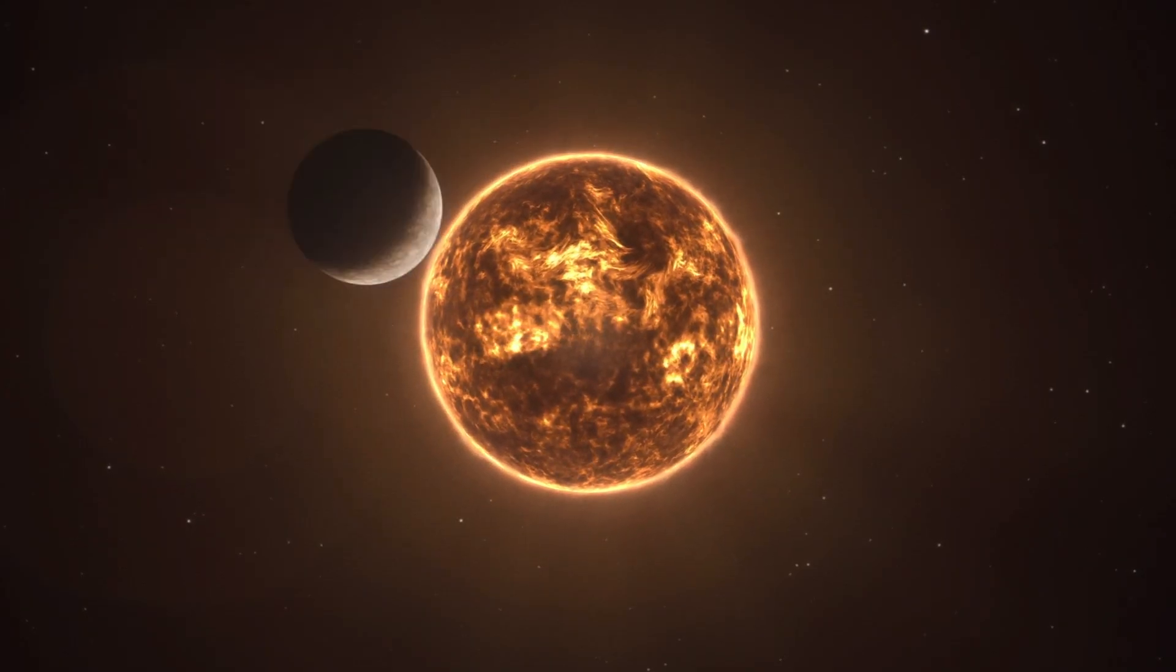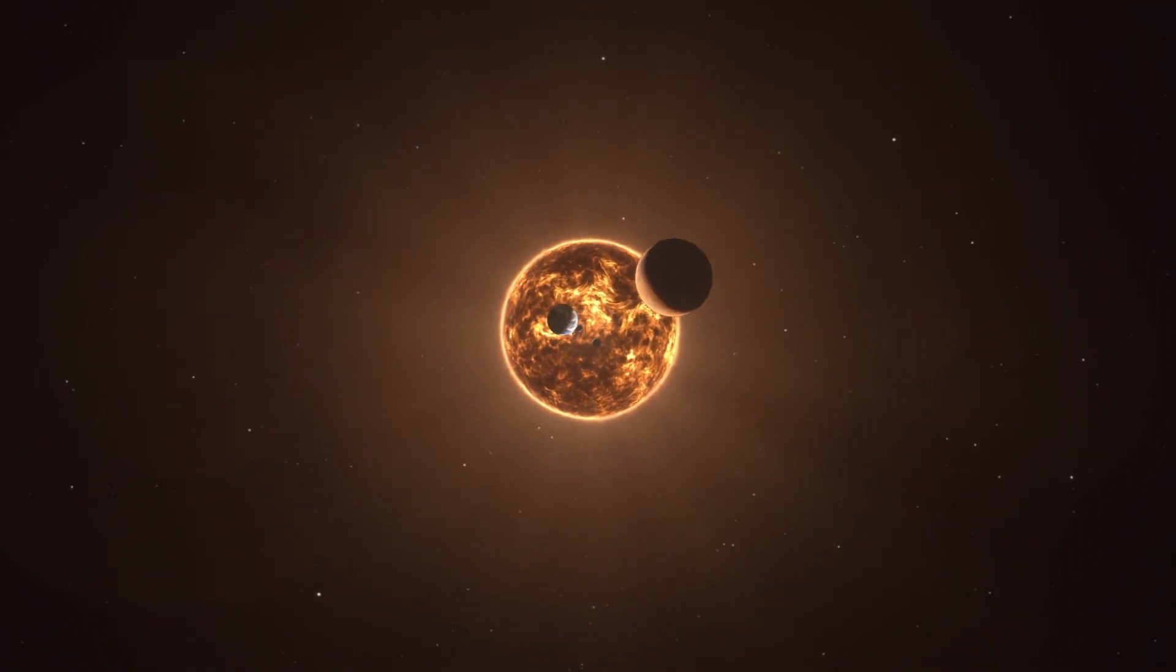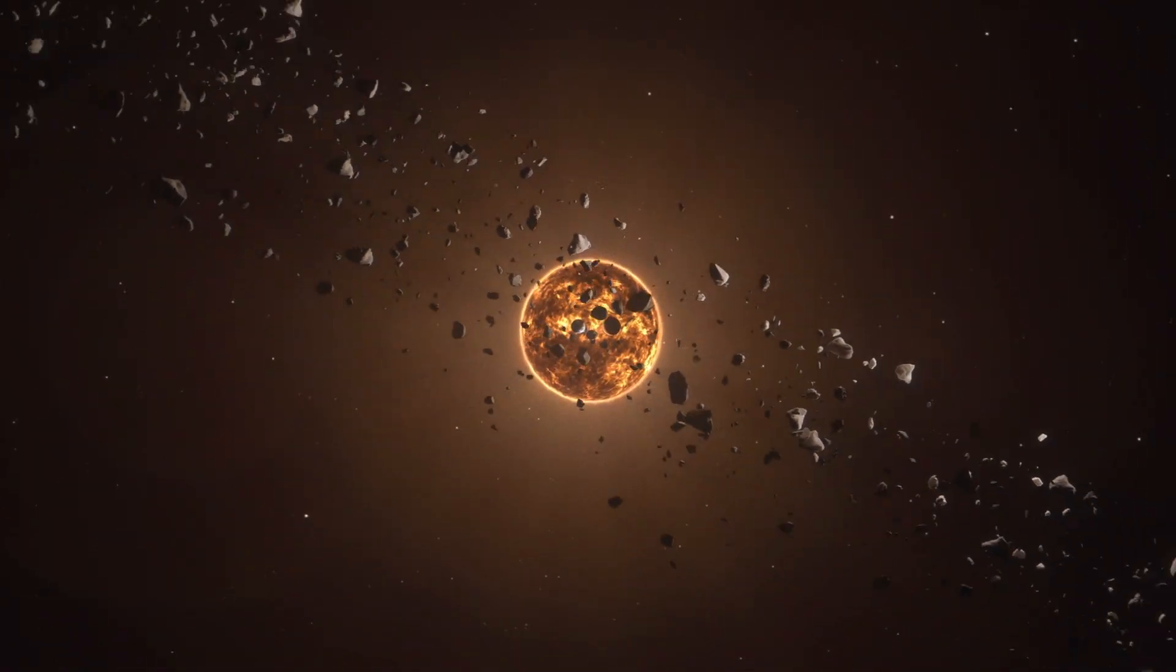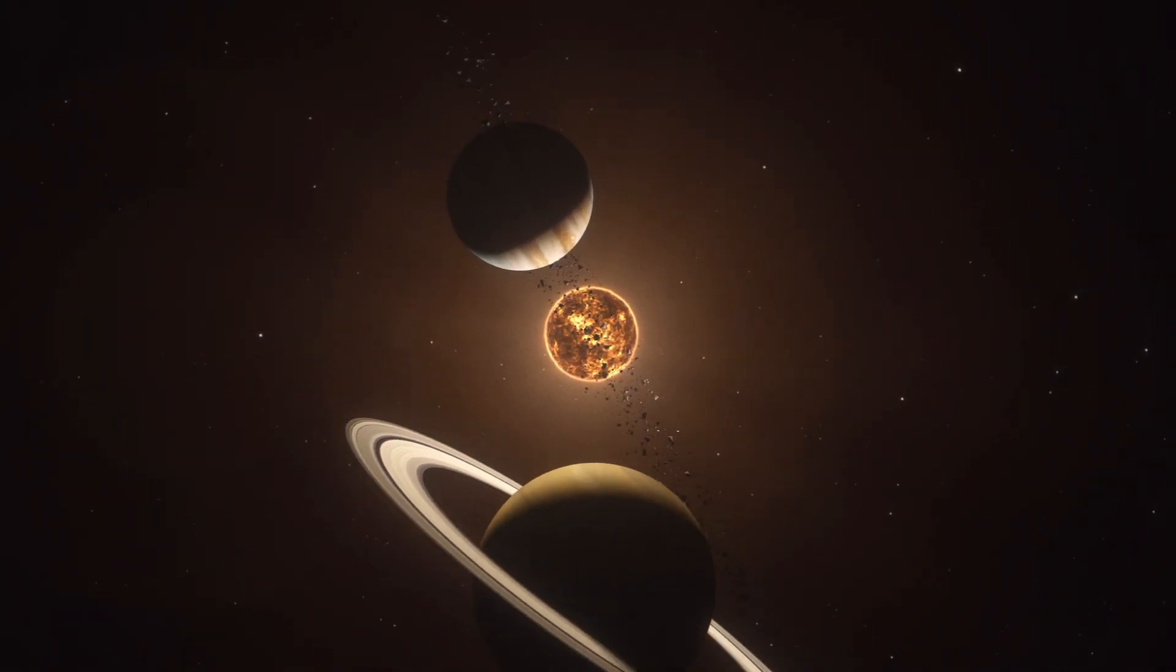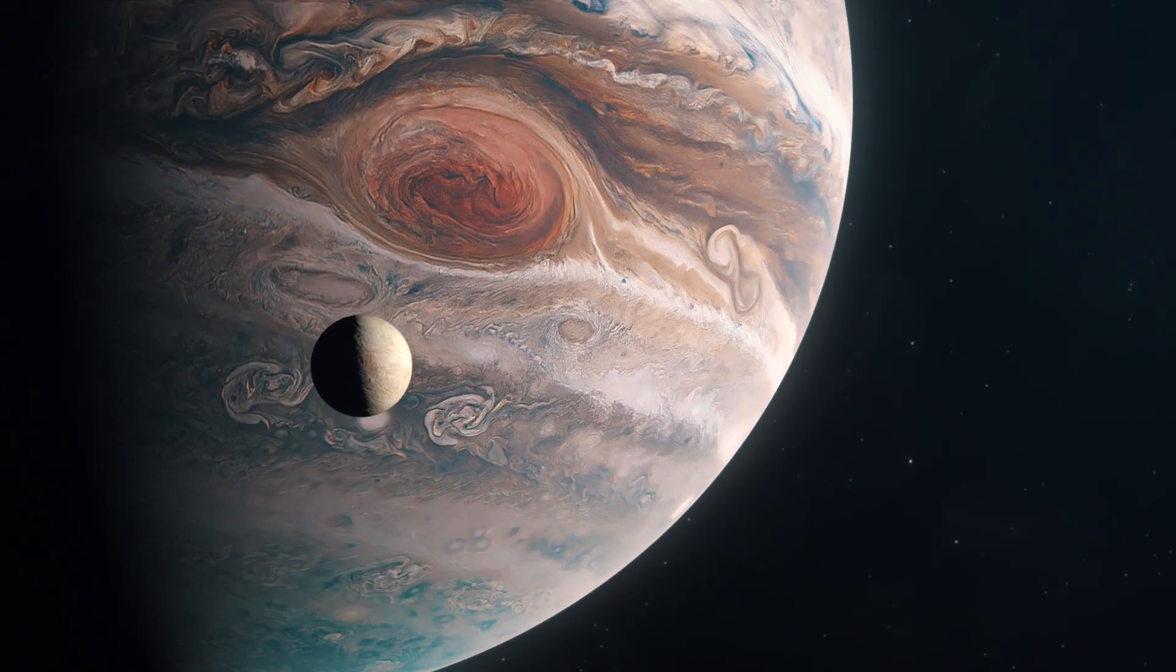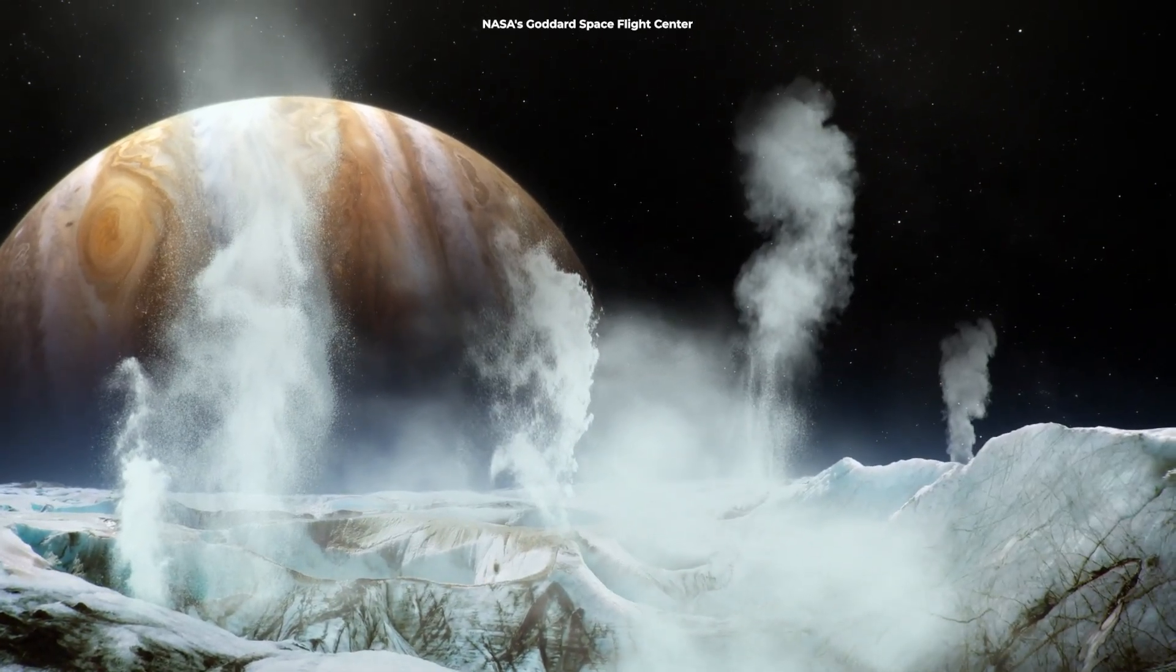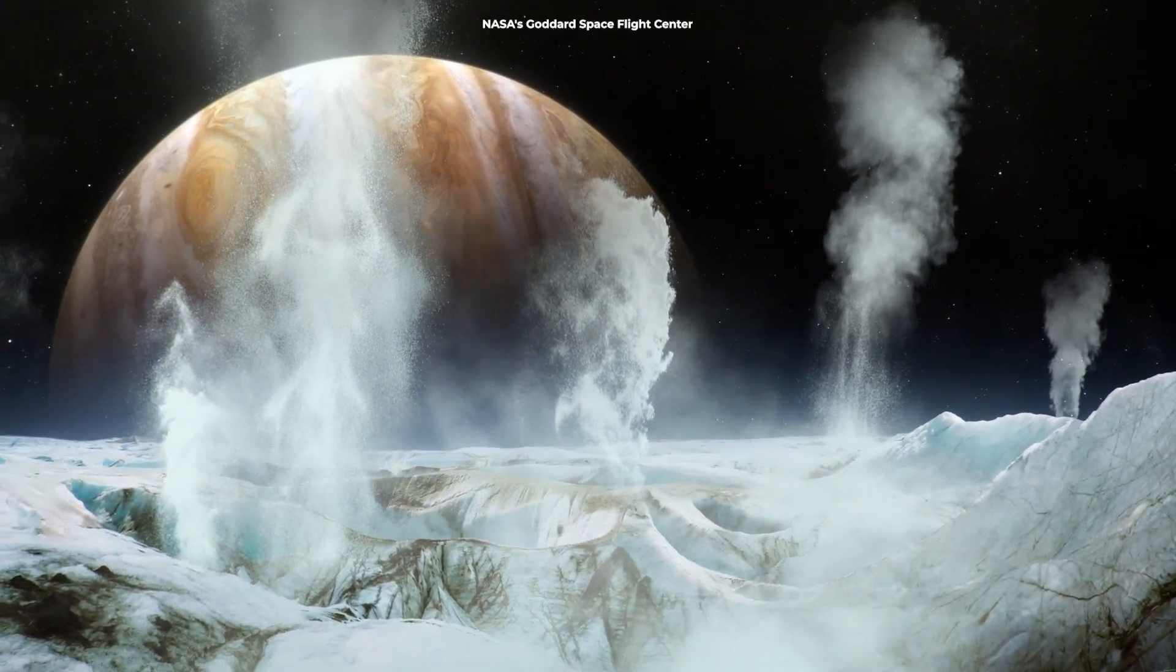While hunting for alien life might grab all the headlines, the Habitable Worlds Observatory has a few more tricks up its sleeve. Let's start closer to home. Right here in our own cosmic backyard, there are worlds that have captivated scientists for decades. Take Jupiter's moon Europa, a world with an ice-covered ocean that might contain twice as much water as all of Earth's oceans combined.